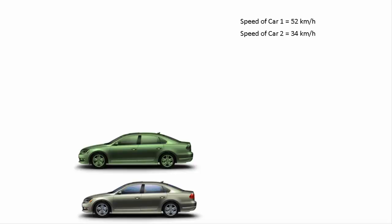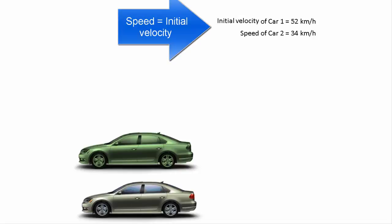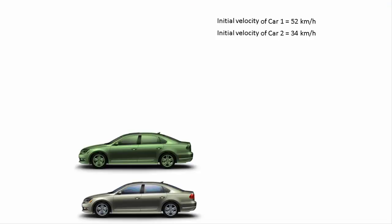And you know very well, instead of speed in science we use the word velocity. That is, initial velocity of car 1 is 52 km per hour and initial velocity of car 2 is 34 km per hour.